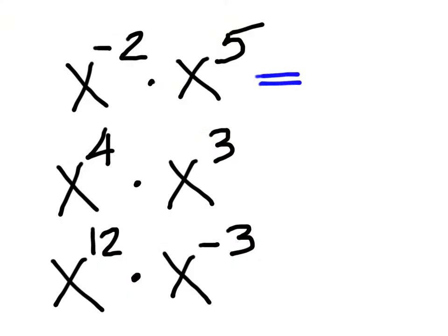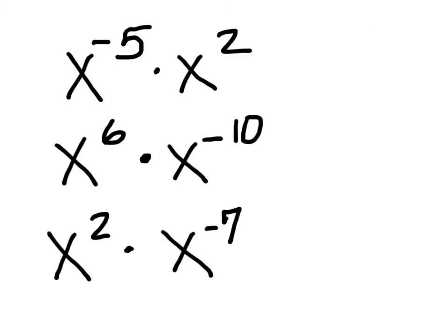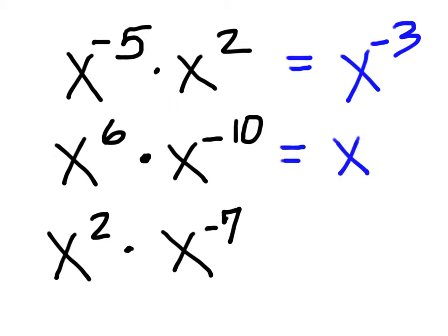Student practice for Rule 1. The simplified version of the first problem is x to the third. The second is x to the 7th. The third is x to the 9th. For the negative exponent problems: the first answer is x to the negative 3rd, the second is x to the negative 4th, and the last is x to the negative 5th.